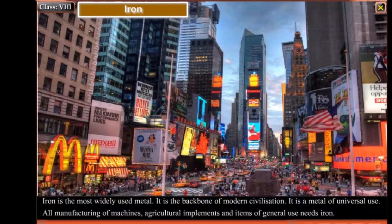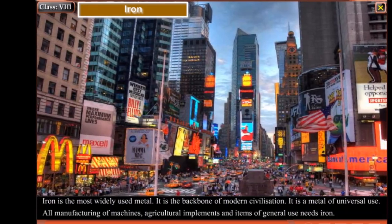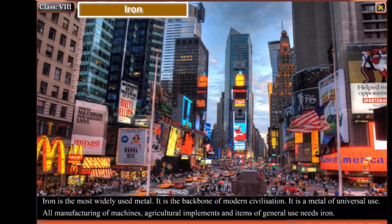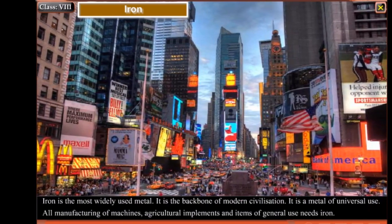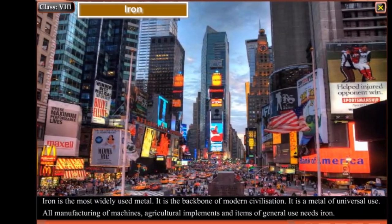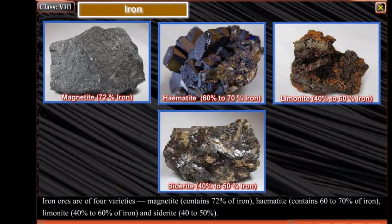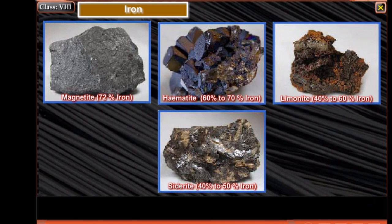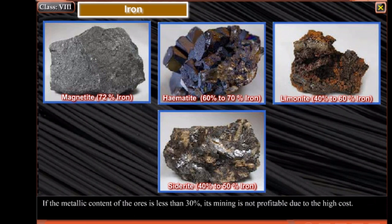Iron is the most widely used metal. It is the backbone of modern civilization and a metal of universal use. All manufacturing of machines, agricultural implements and items of general use needs iron. Iron ores are of four varieties: Magnetite, containing 72% of iron; Hematite, containing 60% to 70% of iron; Limonite, 40% to 60% of iron; and Siderite, 40% to 50% of iron. If the metallic content of the ores is less than 30%, its mining is not profitable due to the high cost.